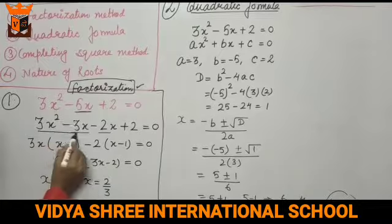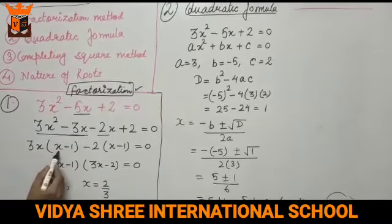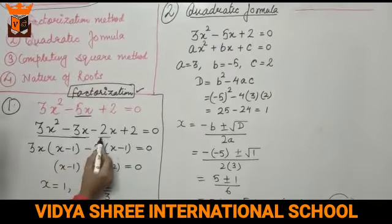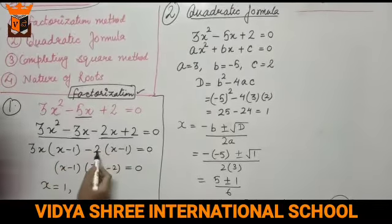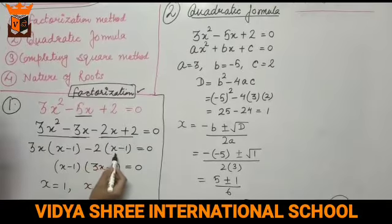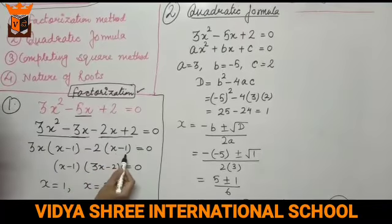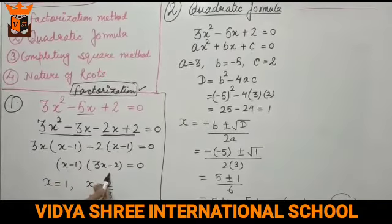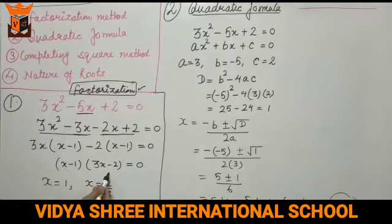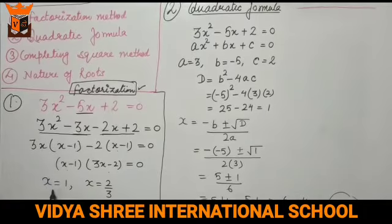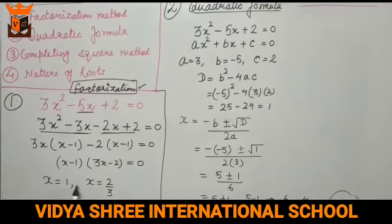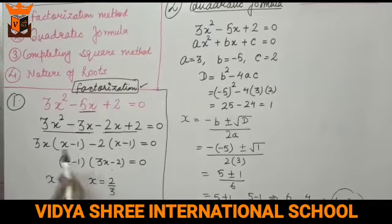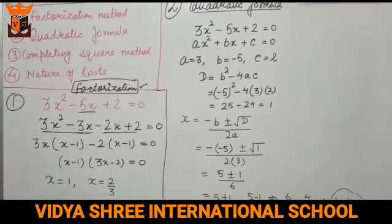Taking 3x common gives bracket x minus 1, then taking minus 2 common gives bracket x minus 1. So the factors are x minus 1 and 3x minus 2. Therefore x equals 1 and x equals 2 by 3.